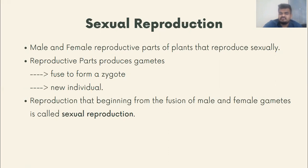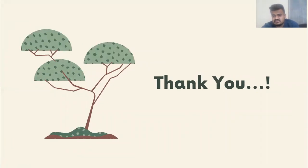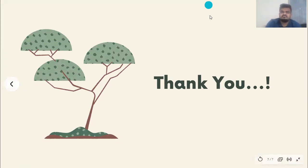So the definition once again: reproduction that begins from the fusion of male and female gametes is called sexual reproduction. I hope you are clear with this. In the next session we will go through the male and female reproductive organs — the parts that humans use for sexual reproduction. That's it for today, thank you very much, have a nice day.